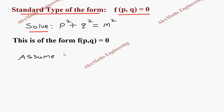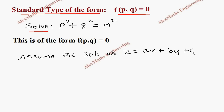We assume the solution as z = ax + by + c. We differentiate this partially with respect to x, which gives p = a, and partially differentiate with respect to y, which gives q = b.